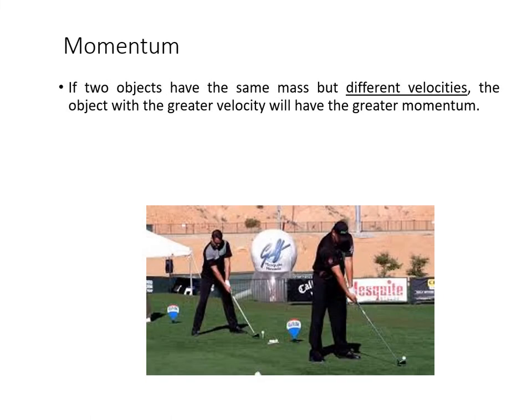On the flip side, when the mass is the same but we have different velocities, the object with the greater velocity will have the greater momentum. Whichever of those two golf players can generate the greatest speed at the golf club head on the ball — which has the same mass — will generate the greatest momentum and the ball will go further. We'll be looking more closely at that with projectile motion next week.